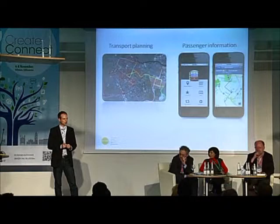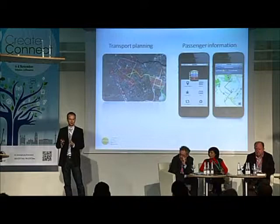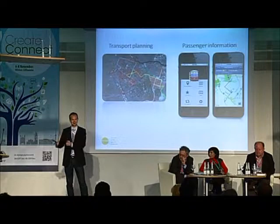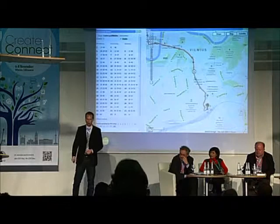So where can open data help to tackle these issues in megacities? I think especially in two things: transport planning and passenger information. Both are really necessary to move people from their private vehicles — their cars, their motorbikes — to use public transport. You have to have a good, well-planned system and you have to inform people how they can get from A to B.